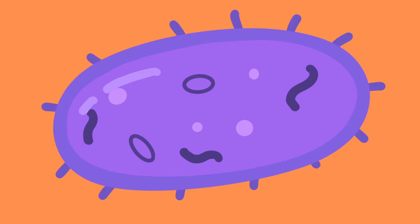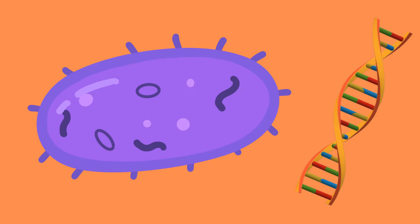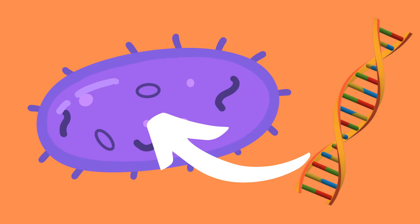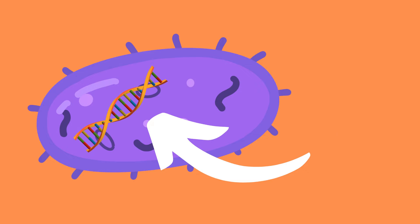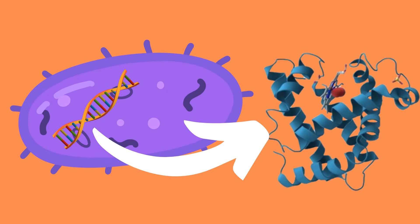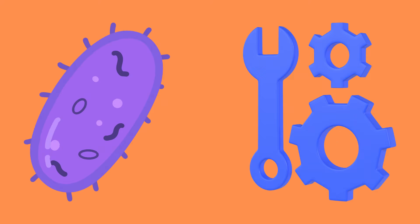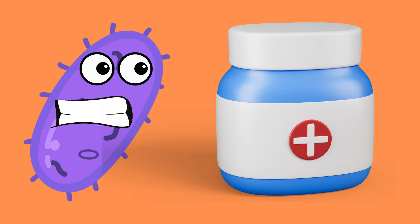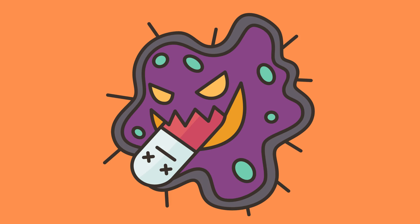Bacterial recombination is characterized by DNA transfer from one donor organism to a recipient organism, which allows the bacteria to express new proteins. This may give the bacteria additional functionality, such as antibiotic resistance, which in turn can be of selective advantage.